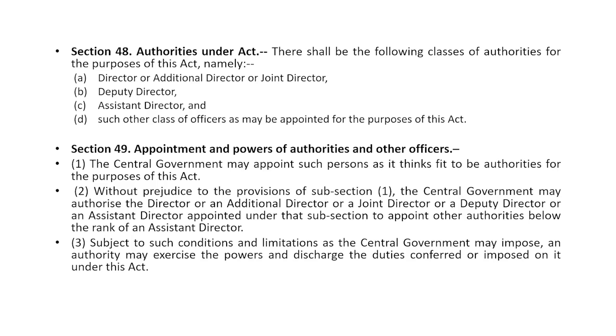Section 49 covers appointment and powers of authorities. The central government may appoint such persons as it thinks fit to be authorities under this Act. Under subsection 2, the central government may authorize the Director, Additional Director, Joint Director, Deputy Director or Assistant Director to appoint other authorities below the rank of Assistant Director, and may impose restrictions on powers exercisable by these authorities.